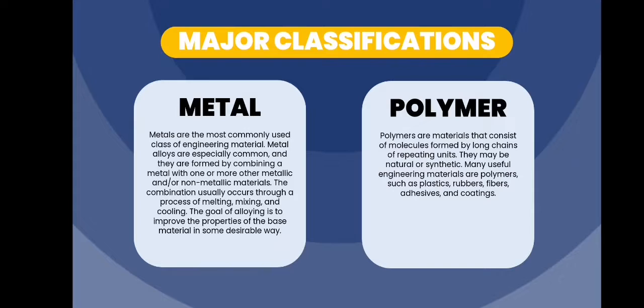Metal. Metals are the most commonly used class of engineering material. Metal alloys are especially common and they are formed by combining a metal with one or more other metallic and non-metallic materials. The combination usually occurs through a process of melting, mixing, and cooling. The goal of alloying is to improve the properties of the base material in some desirable way.